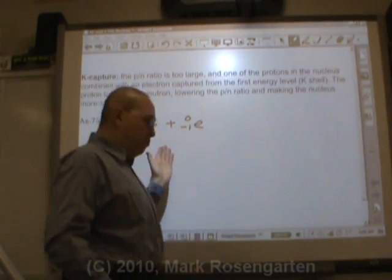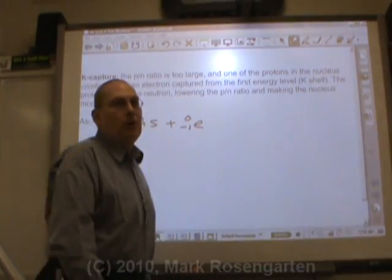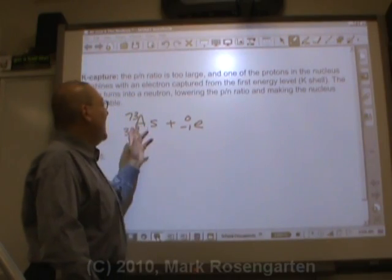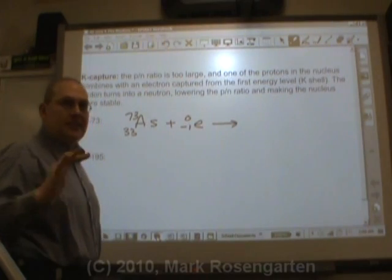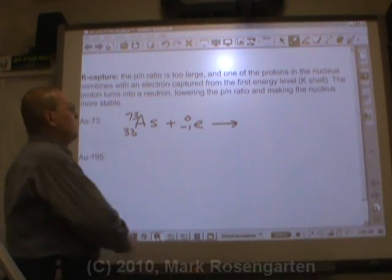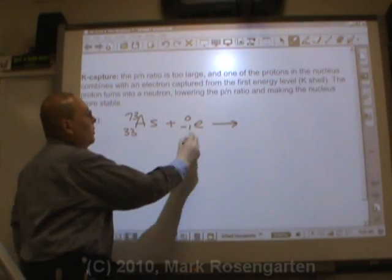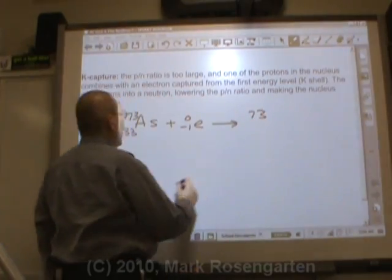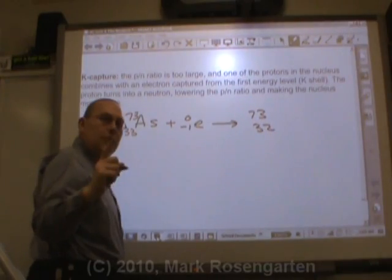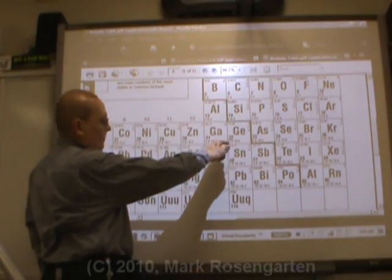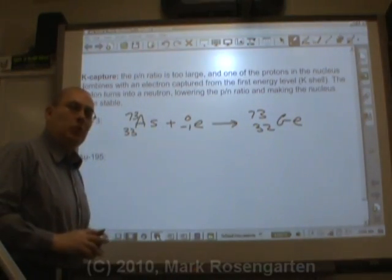In beta decay, the nucleus burps out a beta particle. But in K-capture, it captures a beta particle. But the whole way of doing it still remains the same. The law of conservation of mass, 73 plus 0 equals 73. 33 and negative 1 gives you 32, and element 32 is germanium. And so that's how K-capture works.